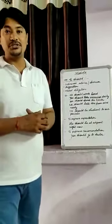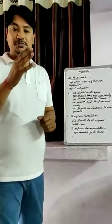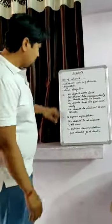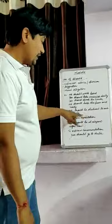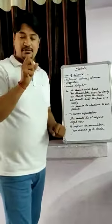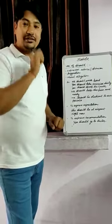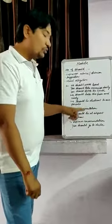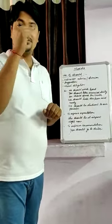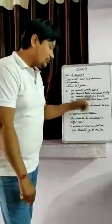We should be obedient to our parents — again, that is our moral obligation and moral duty. We must pay respect to our parents as well as to our teachers. Further, should also expresses expectation. When we think that something should be the case — for example, she should be at the airport right now. That is my expectation. So should expresses expectation as well.